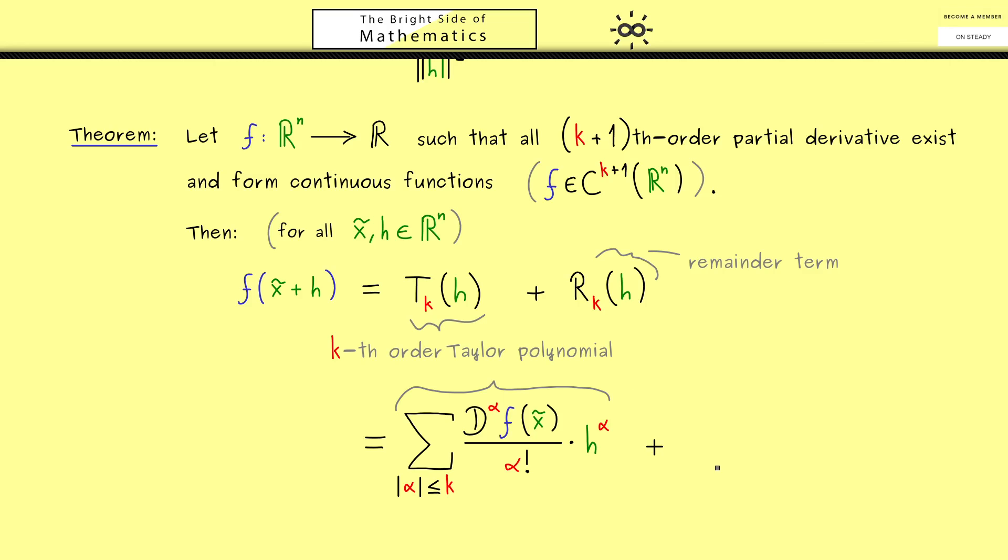In fact, there is a very nice one, which almost looks the same as the formula for the Taylor polynomial. The only difference here is that we now only look at the multi-indices with the highest order, so k+1. Moreover, we also don't evaluate the partial derivatives here at the expansion point x tilde, but at an intermediate point. And as often, we use for this point the Greek letter ξ.